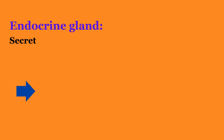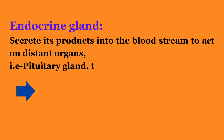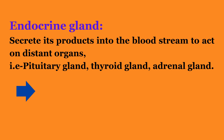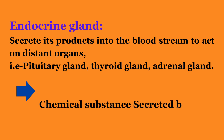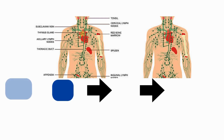Second, endocrine glands, which secrete their products into the bloodstream to act on distant organs — like the pituitary gland, thyroid gland, and adrenal gland. The chemical substance secreted by endocrine glands is called a hormone.